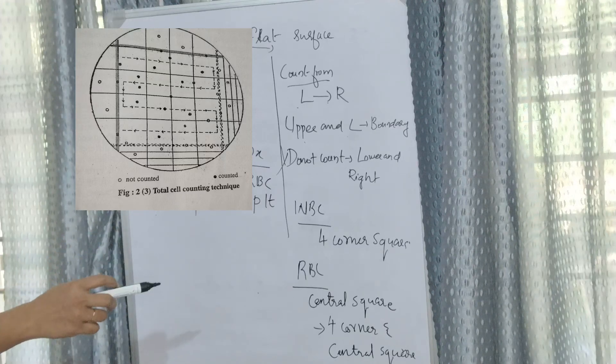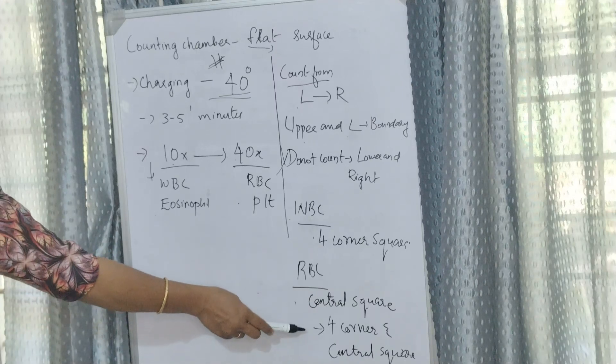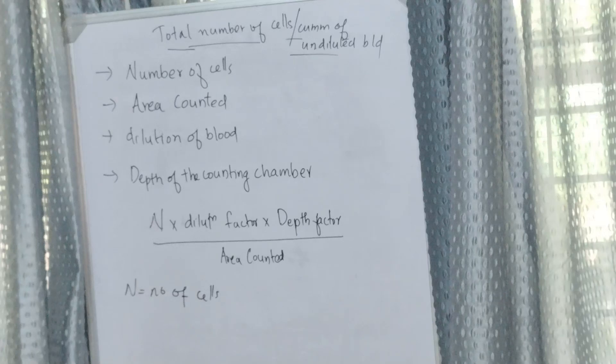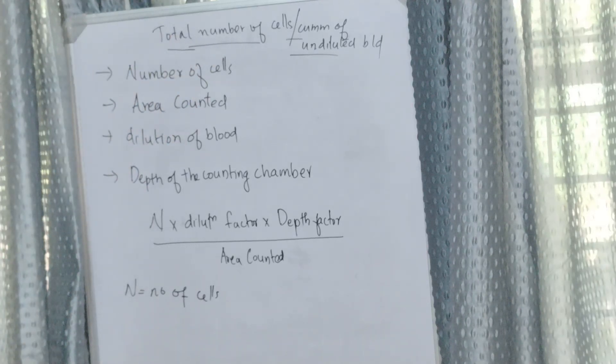Count the four squares in the case of WBC count and the four corner and central squares of the RBC area for RBC count. After counting, the total number of cells per cubic millimeter of undiluted blood can be calculated.